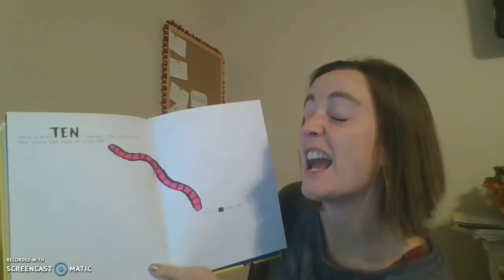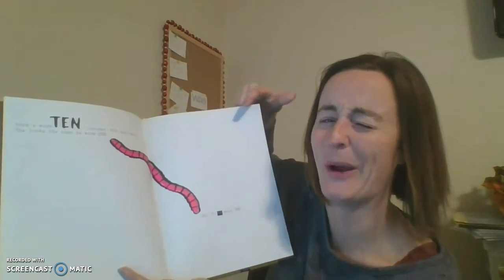One, two, three, four, five, six, seven, eight, nine, ten. Here's worm ten. Instead, the last worm. She looks the same as worm one. Oh wait, it is worm one.